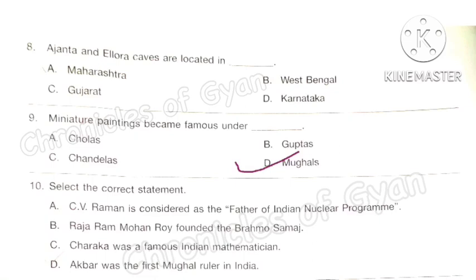Question 10: Select the correct statement. Statement A — CV Raman is considered the father of the Indian nuclear program — is incorrect, as Homi Bhabha is considered the father of the Indian nuclear program. Statement B — Rajaram Mohan Roy founded the Brahmo Samaj — is correct. Statement C — Charaka was a famous Indian mathematician — is incorrect, as he was related to Ayurveda. Statement D — Akbar was the first Mughal ruler in India — is incorrect, as Babur was the first Mughal ruler. So the correct answer is option B.